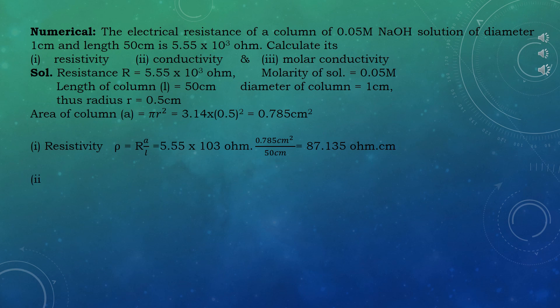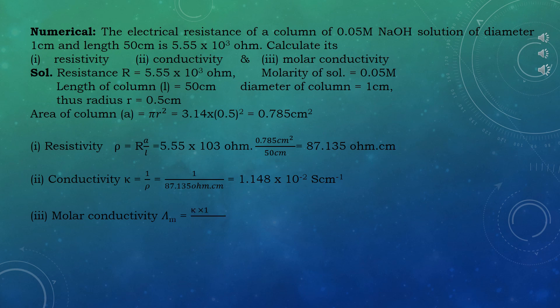Next, calculate conductivity κ, which is the reciprocal of resistivity: κ equals 1/87.135 Ohm·cm, which comes out to be 1.148 × 10⁻² Siemens per cm. Then molar conductivity λM equals κ × 1000 / molarity, that is 1.148 × 10⁻² × 1000 / 0.05, which comes out to be 229.67 Siemens·cm² per mol.